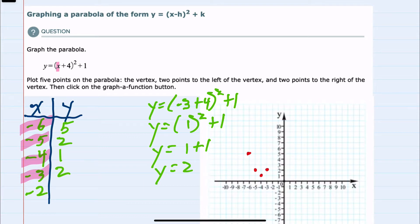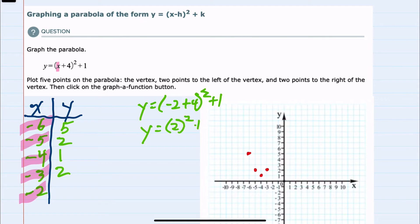And then lastly, substituting in -2, we would have y = (-2 + 4)² + 1. So inside parentheses, -2 + 4 is 2 squared. 2 squared would be 4 plus 1 gives us y equals 5. So our last coordinate is at (-2, 5). Negative 2, 5.